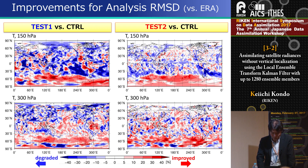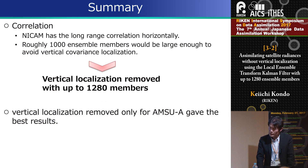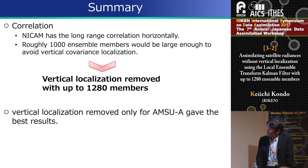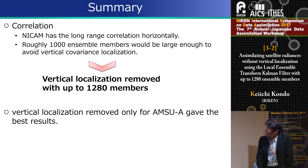In summary, we performed 10,000-member NICAM-LETKF. NICAM has a long-range horizontal correlation structure, and vertically, roughly 1,000 members would be large enough to avoid vertical covariance localization. We removed the vertical localization with up to 1,280 members. As a result, the experiment without vertical localization for AMSU-A only had the best result.